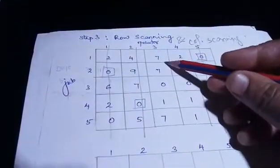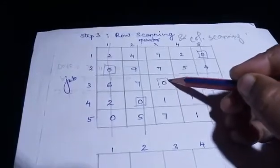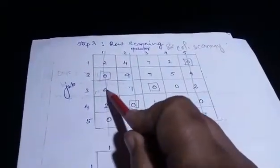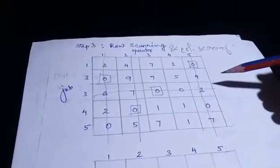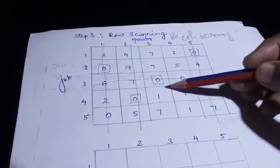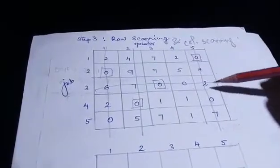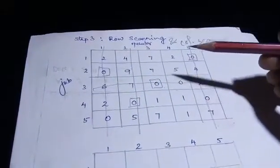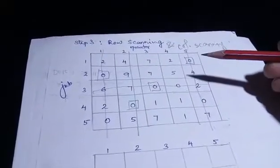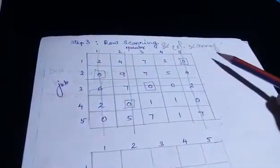Now perform column scanning. Check the third column: values are 7, 7, 0, 1, and 7 — there is a single zero. Mark that zero and cut that row. Continue column scanning, marking single zeros and cutting the corresponding row. After row scanning and column scanning, check for any remaining unmarked zeros.